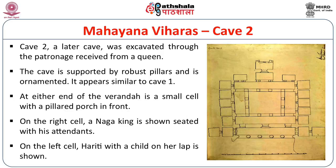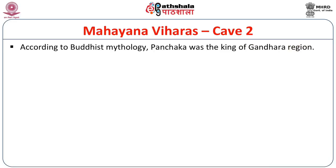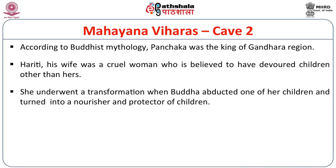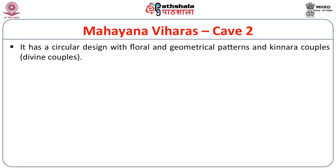At either end of the veranda of Cave 2 is a small cell with a pillared porch in front. On the right cell, a Naga king is shown seated with his attendants. On the left cell, Hariti with a child on her lap is shown. According to Buddhist mythology, Panchaka was the king of Gandhara and Hariti was his wife — a cruel woman believed to have devoured children except her own. She underwent a transformation when Buddha abducted one of her children, turning into a nourisher and protector of children. The cave is also noteworthy for the painted ceilings of its central hall with circular floral and geometrical patterns and kinnara couples.